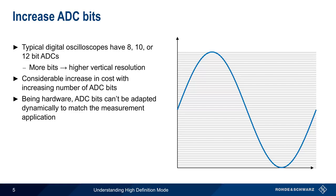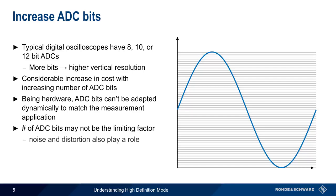In other words, we can't increase or decrease the number of ADC bits to meet different measurement requirements. It should also be noted that limits to vertical resolution may not simply be a function of the number of ADC bits. In many scopes, noise and distortion also limit vertical resolution, regardless of the number of ADC bits.